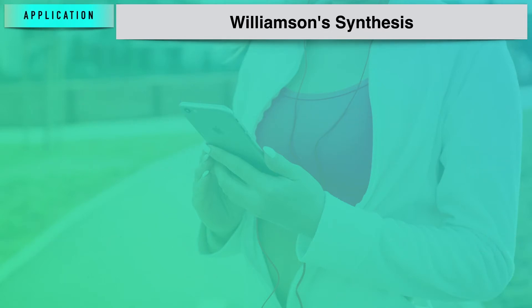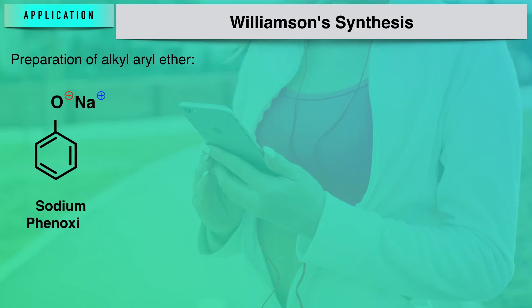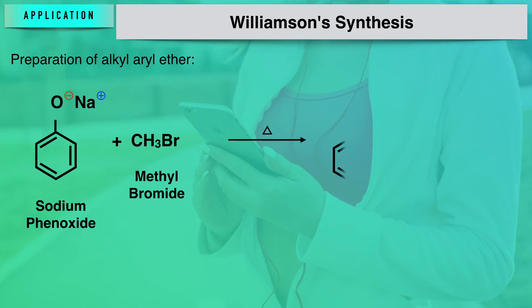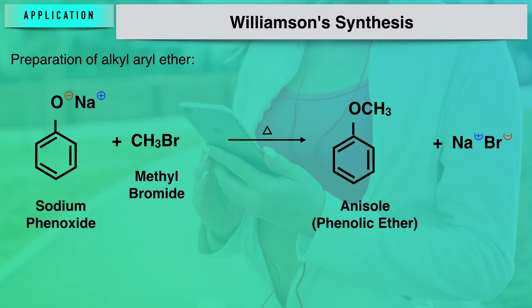An important application of Williamson synthesis is that it can also be used for the preparation of alkyl aryl ethers, also termed phenolic ethers. For example, sodium phenoxide interacting with methyl bromide results in the formation of anisole, which is a phenolic ether.